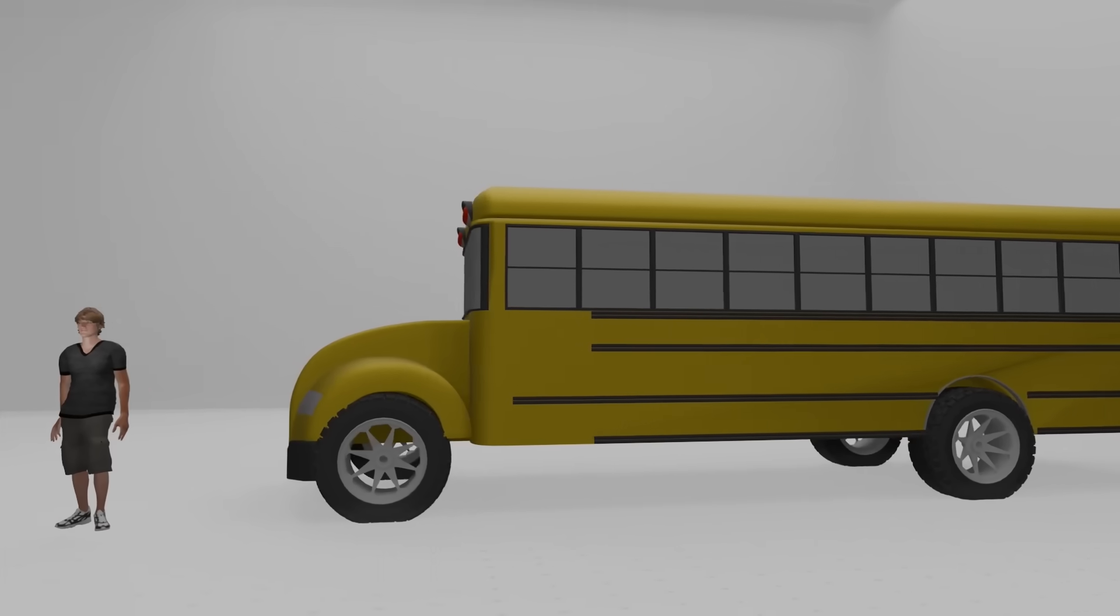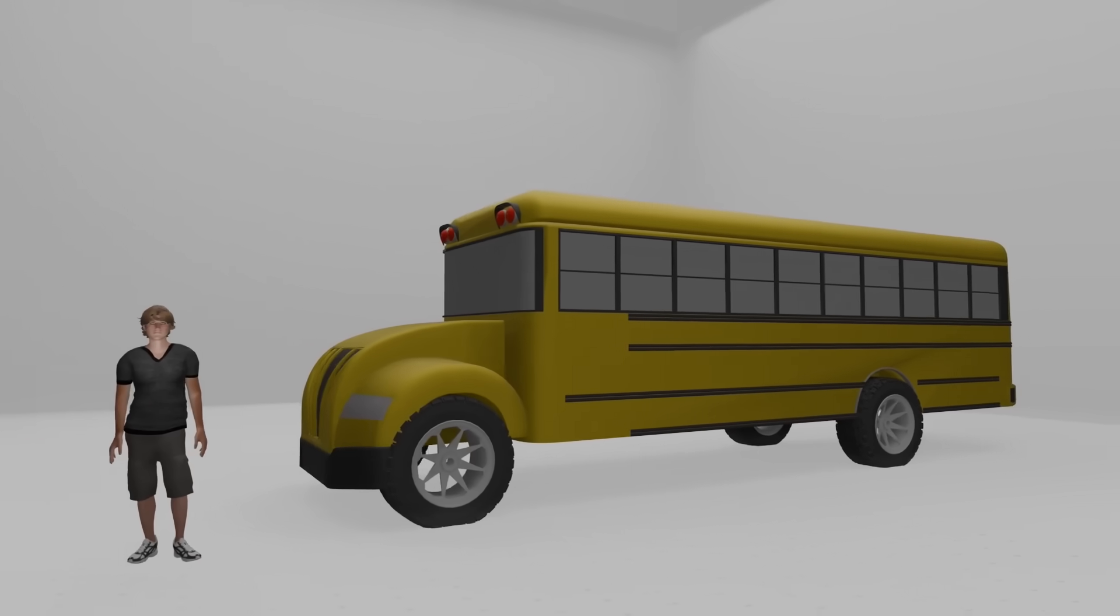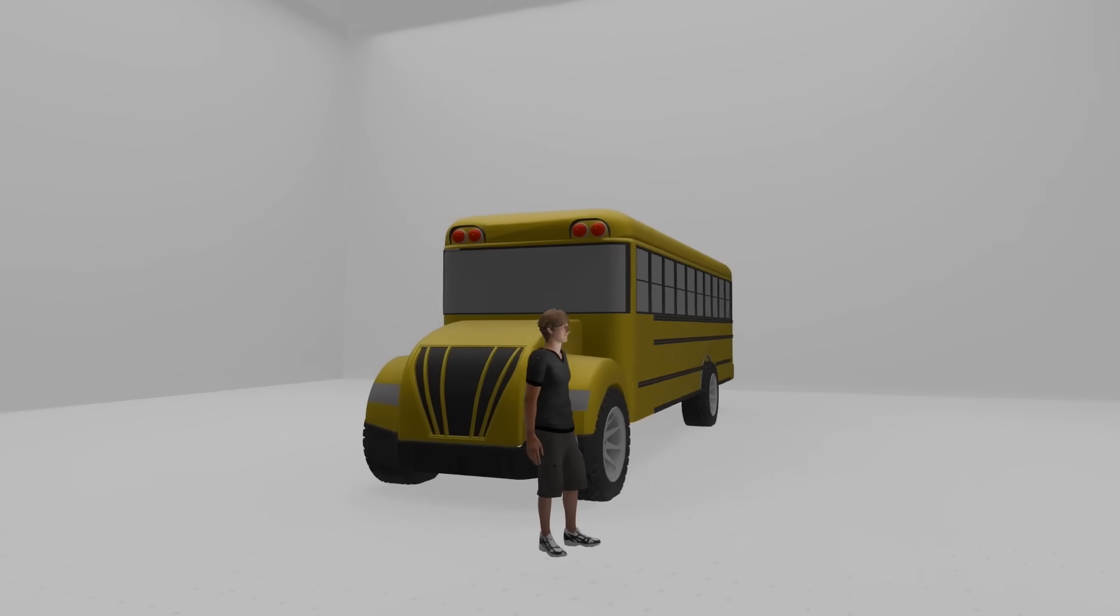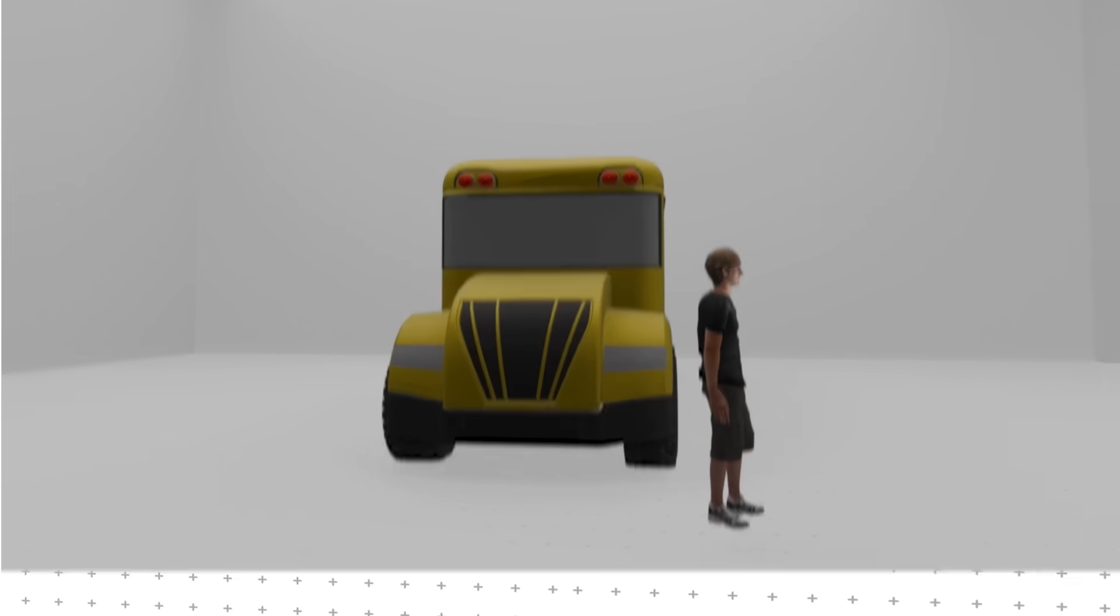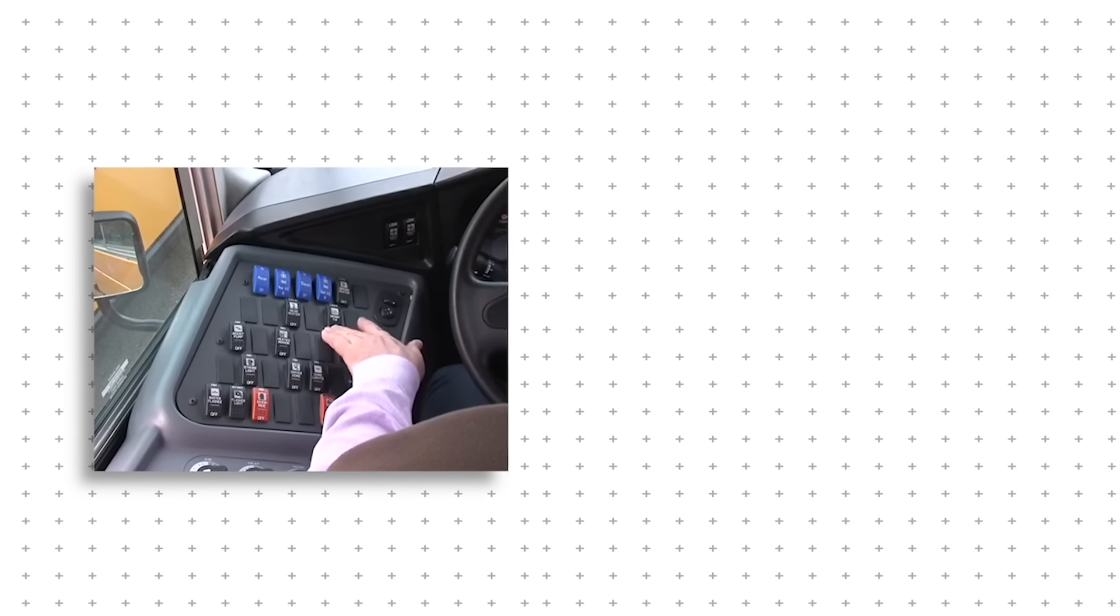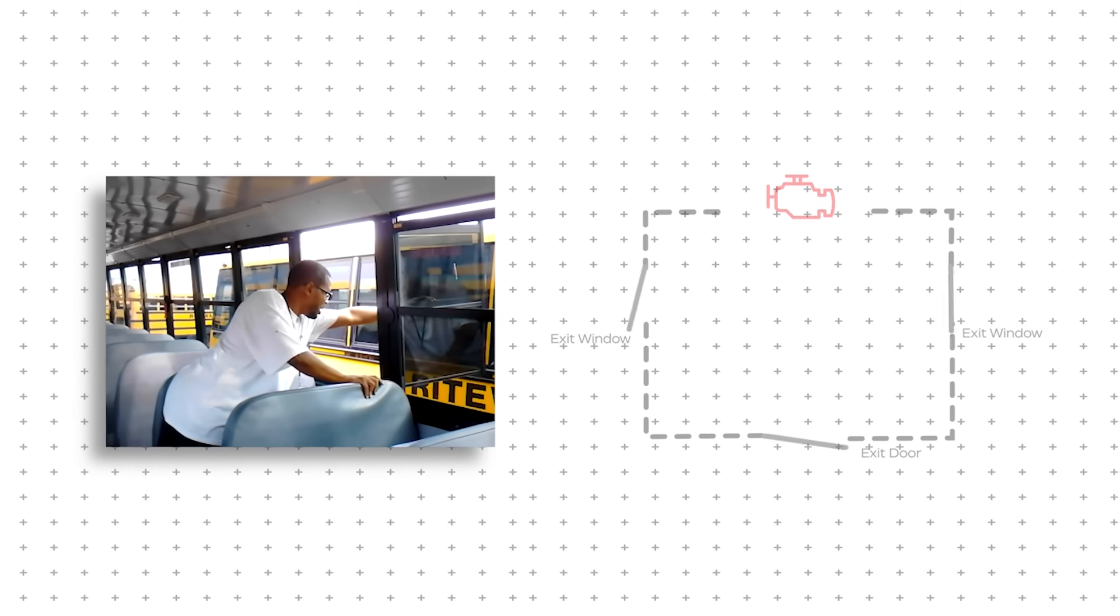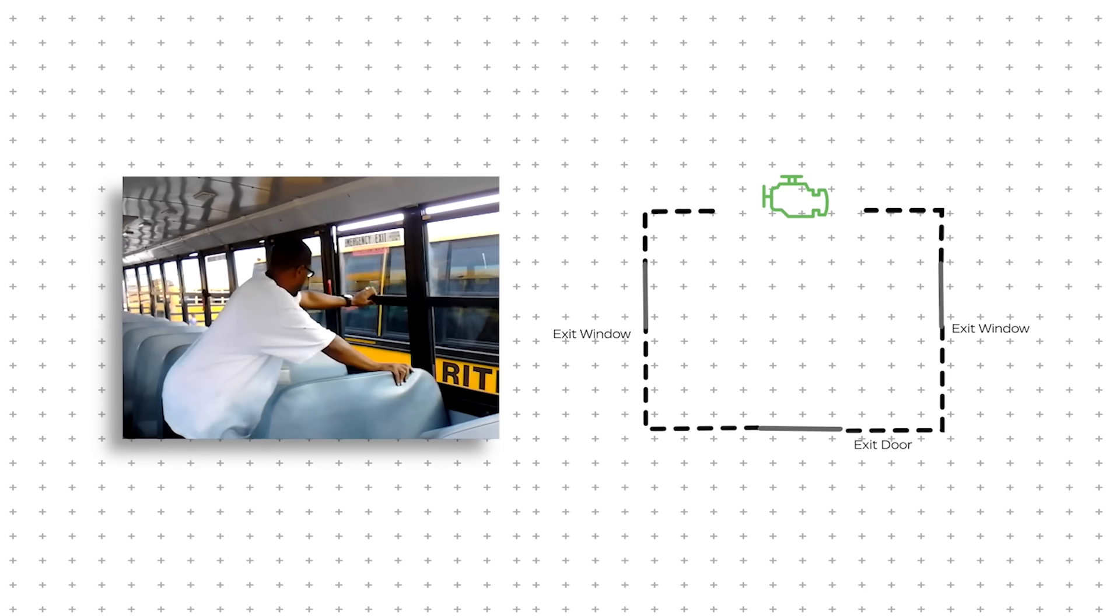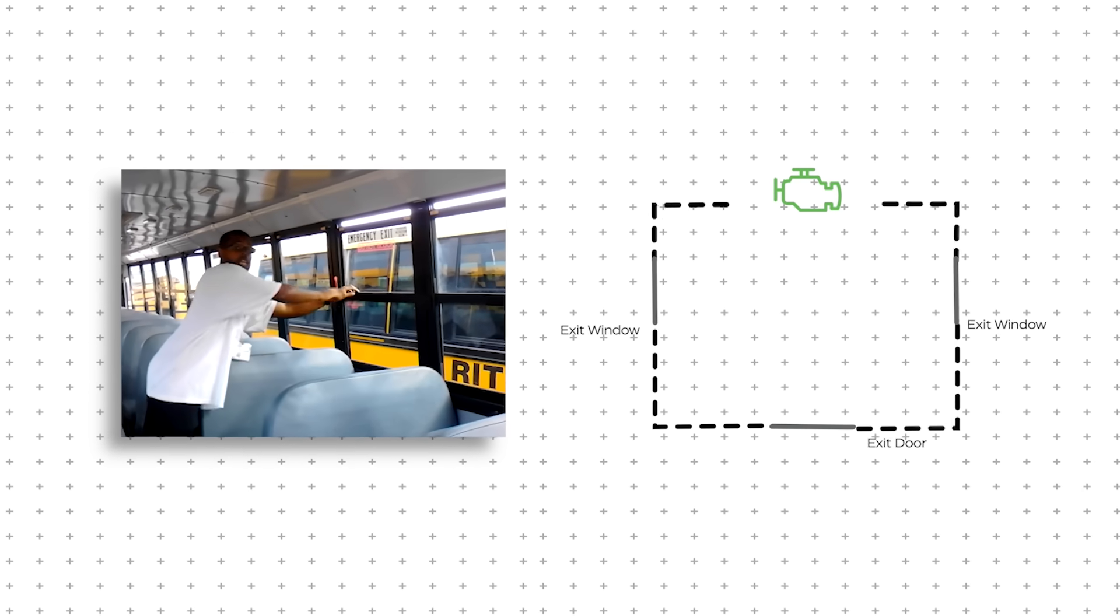But even with all these improvements, school bus-related fatalities still happened, and not always inside the bus. More on that later. A neat feature to prevent driver oversight, modern buses have engine interlock systems that prevent the bus from starting unless all emergency exits are properly closed. This ensures that no exits are accidentally left open while the bus is in motion.